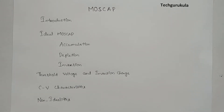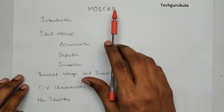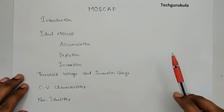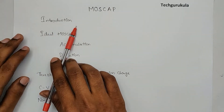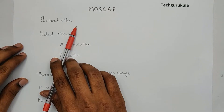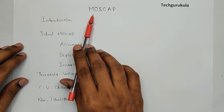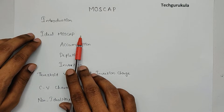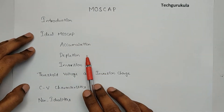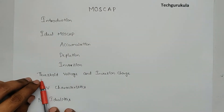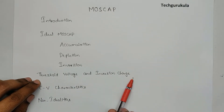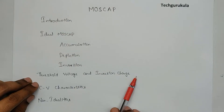In this video, we're going to discuss one of the most important topics — a two-terminal device called MOSCAP. The entire discussion is divided into multiple segments for a systematic understanding. First, we'll cover the introduction of MOSCAP and why we have to study it. Then we'll find the necessary concepts to get the energy band diagram for MOSCAP, understand the ideal MOSCAP and its modes of operation — accumulation, depletion, and inversion — followed by threshold voltage definition, its equation, inversion charge per unit area, and its equation.